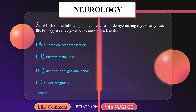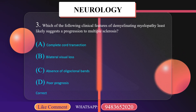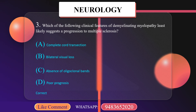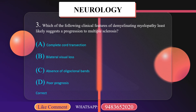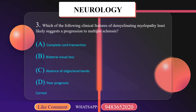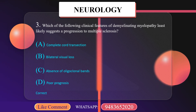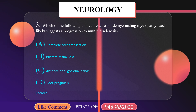Which of the following clinical features of demyelinating myelopathy least likely suggests a progression to multiple sclerosis? A. Complete cord transection. B. Bilateral visual loss. C. Absence of oligoclonal bands. D. Poor prognosis.